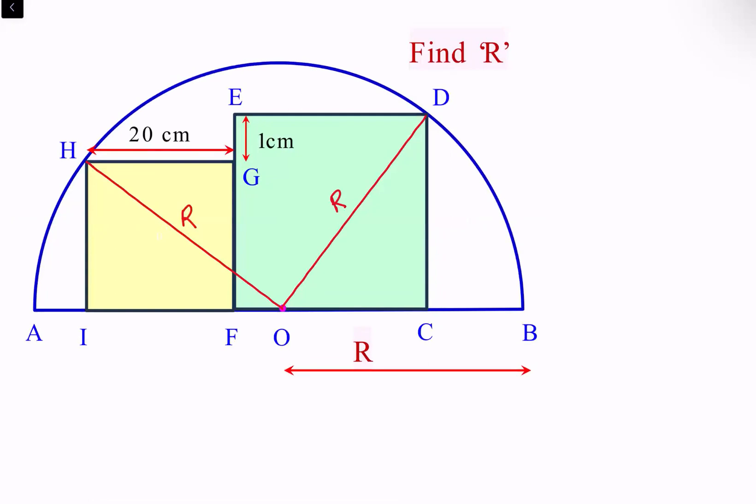Now this height is one centimeter and this is the side of the yellow square. So this is 20 centimeters. From this we are getting that for the green square the length is 1 plus 20, that's 21 centimeters. So this length for the green square, that's E D, is 21 centimeters.